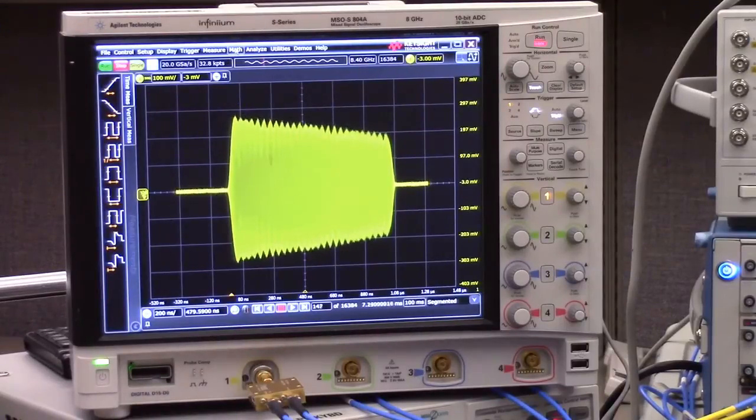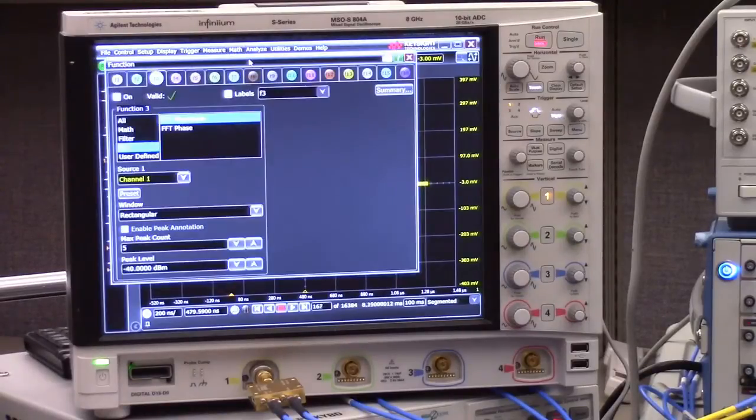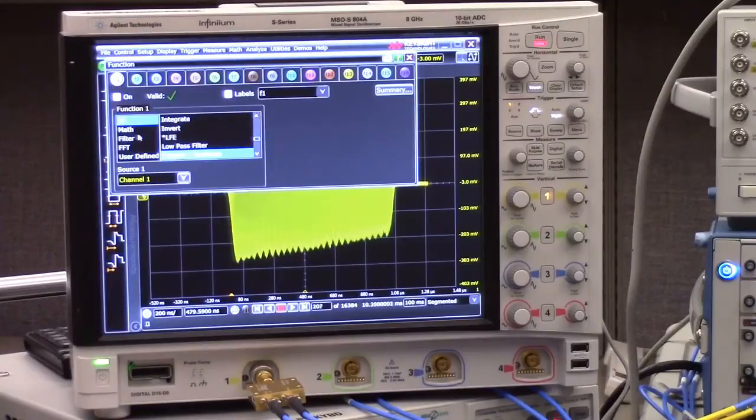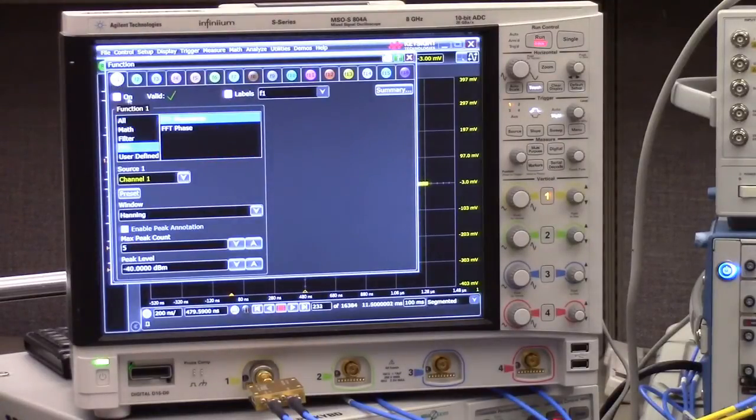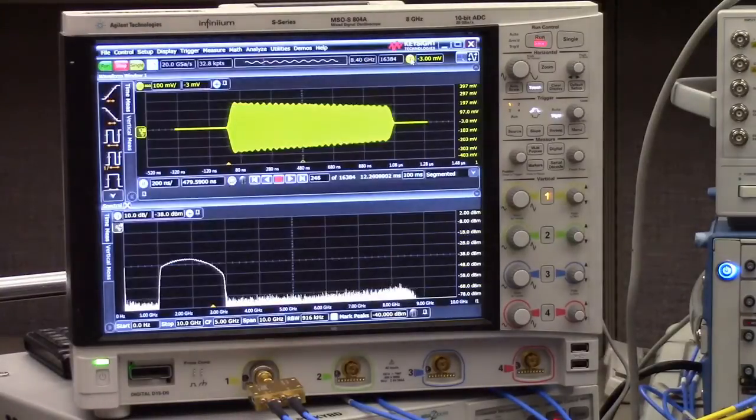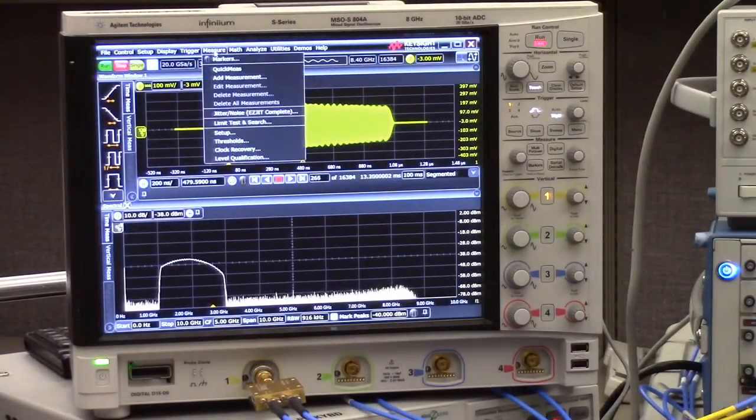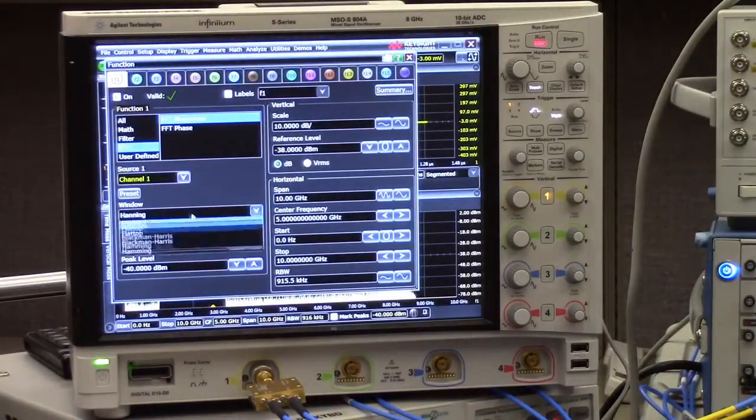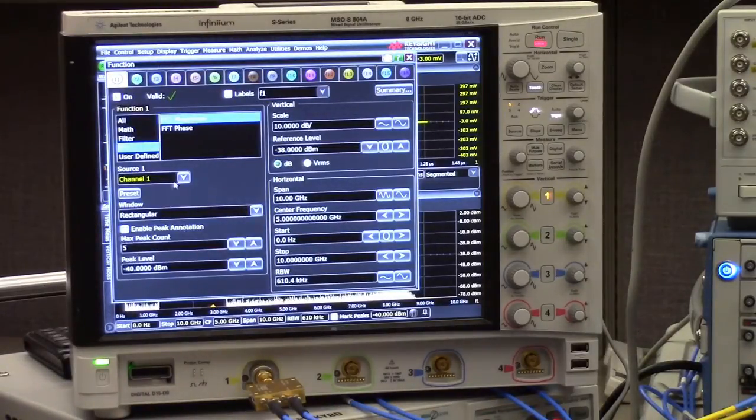So we go into math functions. I'll define a first math function called FFT and turn it on. I'm going to do one more thing under the math function. I'm going to change the window to be a rectangular window. That's the optimal for a wide bandwidth signal.